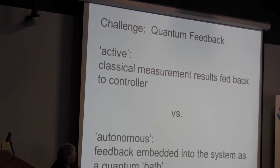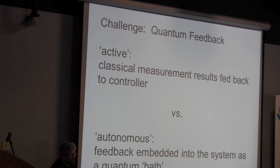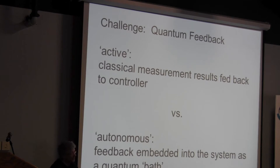Quantum feedback is a related topic. You have some system you want to drive towards some desired state, perhaps in an active manner by measuring something about it, getting the classical measurement results, and then performing a unitary transformation conditioned on those classical error signals that tell you how much your actual state deviates from the desired state. It's a little confusing in quantum mechanics because when you measure something, there's back action associated with wave function collapse, which changes the thing you're measuring. So your feedback loop may have to take that into account.